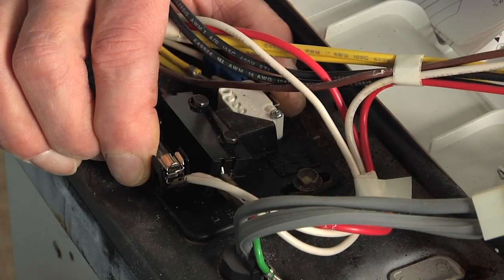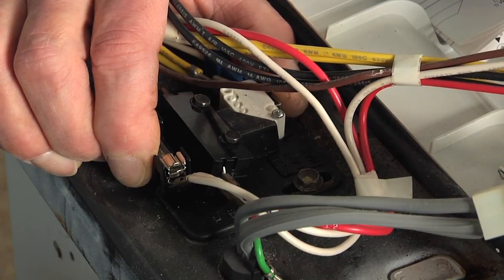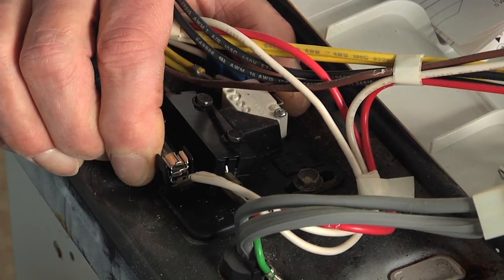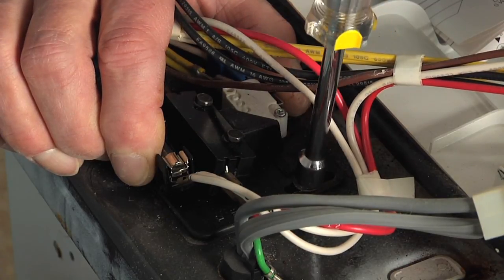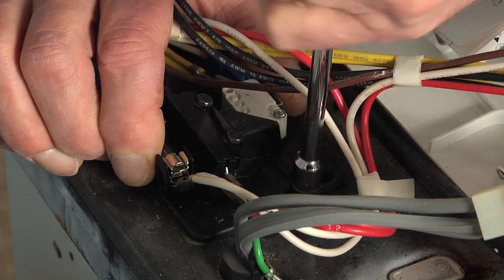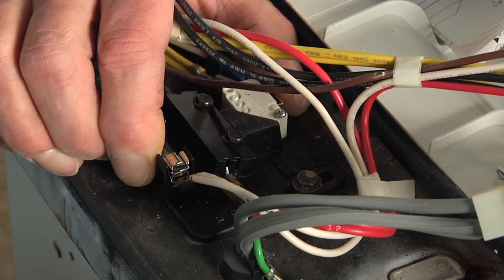Now with the lid opened about an inch and a half to two inches at the front edge, we're just going to slide this switch assembly forward just enough till we hear that switch operate, and then we're going to tighten that screw at that point. Then just raise and lower the lid a couple of times to verify that we still have it in the proper position.